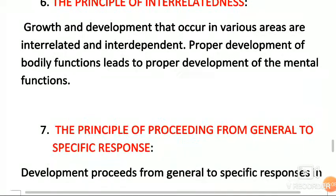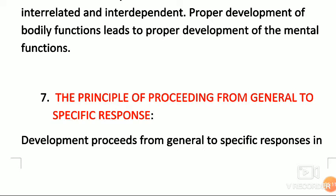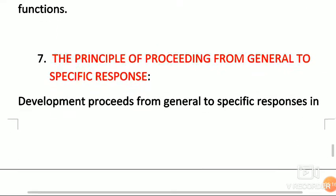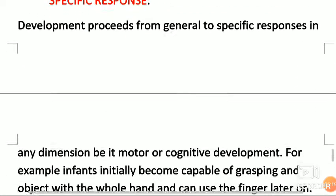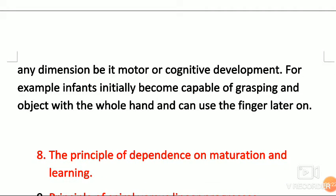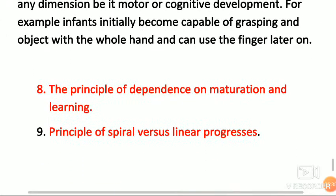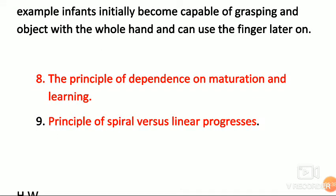The principle of proceeding from general to specific response is also important. Development proceeds from general to specific responses in any dimension, be it motor or cognitive. For example, infants initially grasp an object with the whole hand and can use fingers later on. Principle number eight is the principle of dependence on maturation and learning, and the principle of spiral versus linear progress. These are the principles of development.